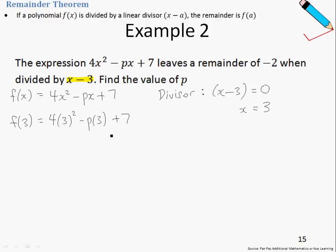Let me simplify this further first. This is 4×9, which is 36, minus 3p+7. If I simplify this a little bit more, I'll just end up with this.